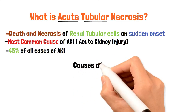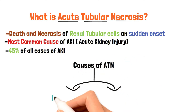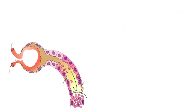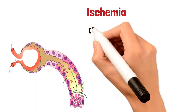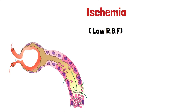The causes of acute tubular necrosis can either be ischemic or nephrotoxic. Ischemia happens when there is low renal blood flow to the kidney and there is less renal perfusion, which means there is not enough oxygen for the renal tubular cells to survive.